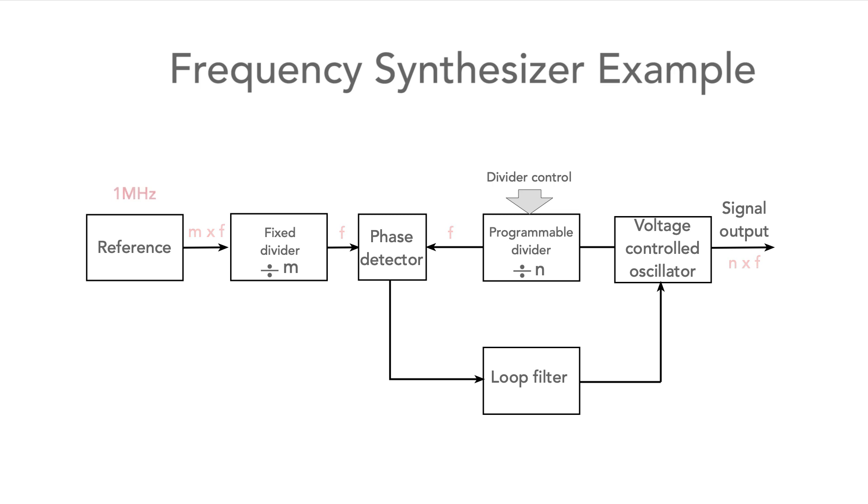For example, using a 1 MHz reference oscillator, a fixed divider with a division ratio of 80 can be used to reduce the phase comparison frequency, and hence the step size to 12.5 kHz, as this is 1 MHz divided by 80. It's then possible to use a programmable divider with a division ratio that extends from 11,520 to 11,680 to enable the VCO to run between 144 and 146 MHz.